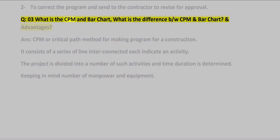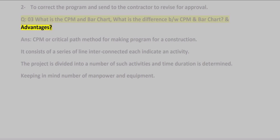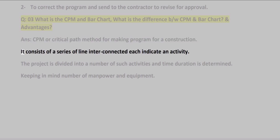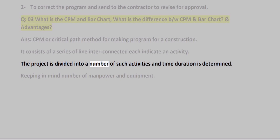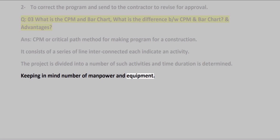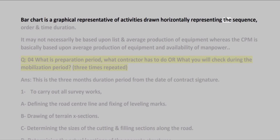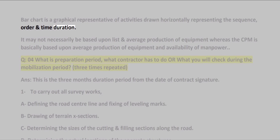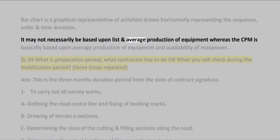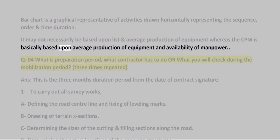Q03: What is CPM and bar chart? What is the difference between CPM and bar chart, and what are the advantages? ANS: CPM (Critical Path Method) is used for making a program for construction. It consists of a series of interconnected lines, each indicating an activity. The project is divided into a number of activities and time duration is determined, keeping in mind manpower and equipment. A bar chart is a graphical representation of activities drawn horizontally, representing the sequence, order, and time duration. A bar chart may not necessarily be based on average production of equipment, whereas CPM is basically based on average production of equipment and availability of manpower.